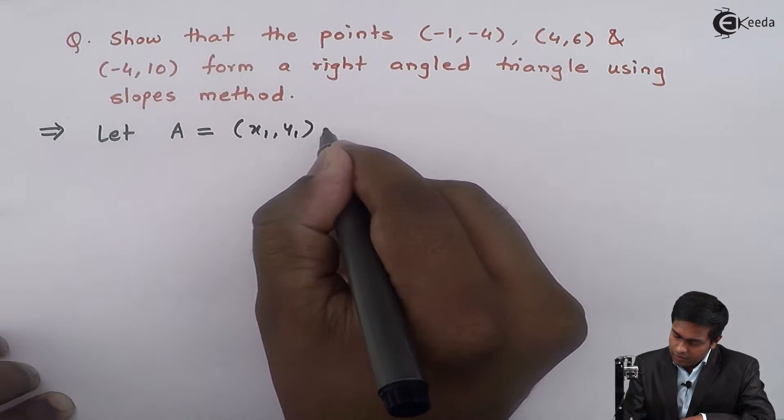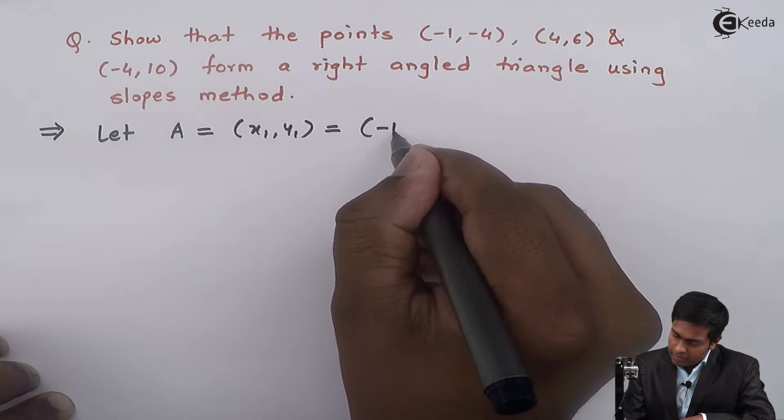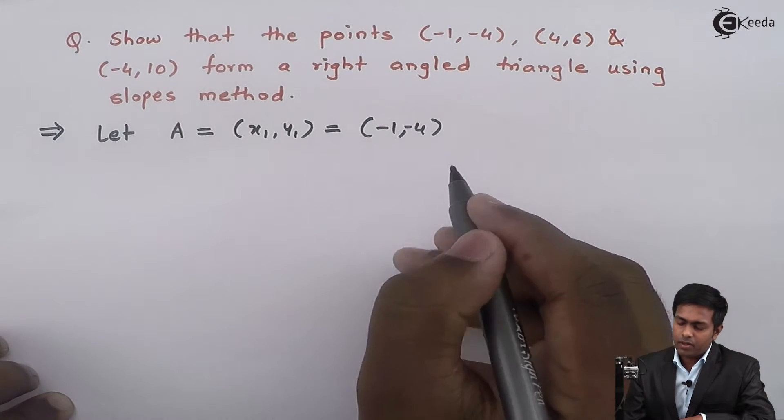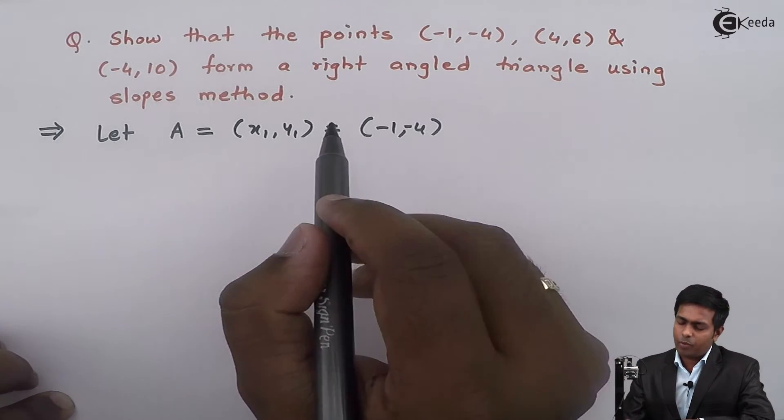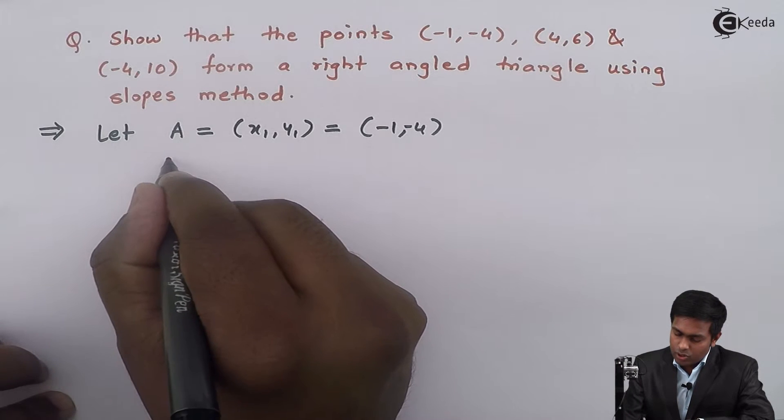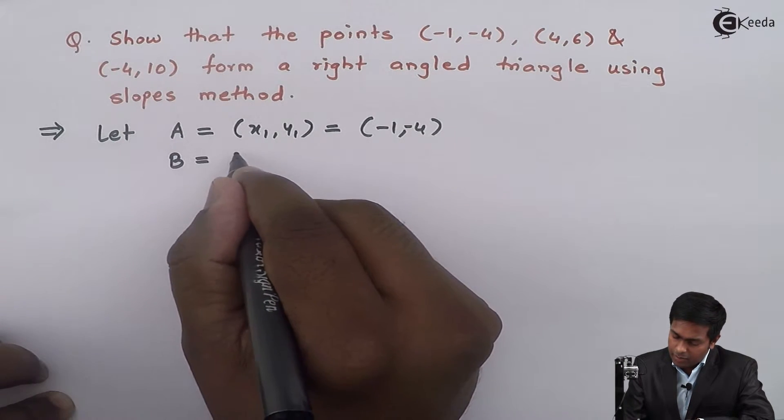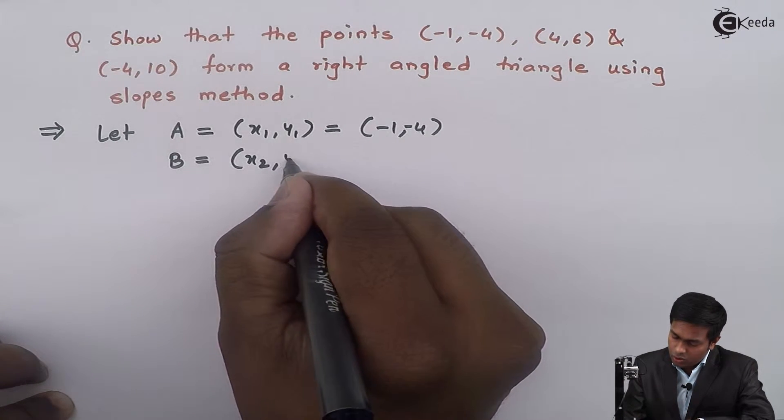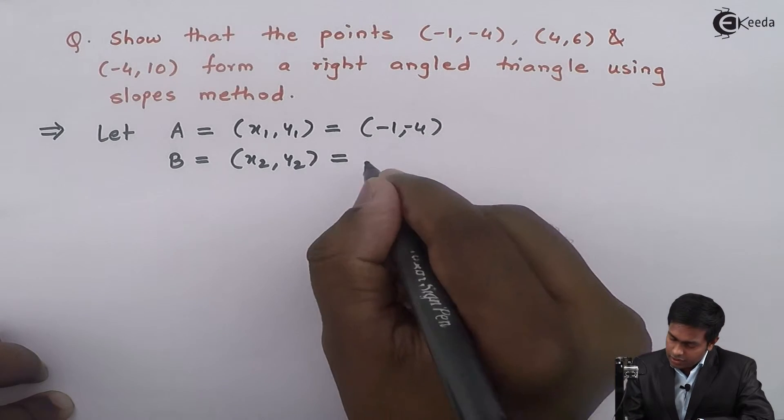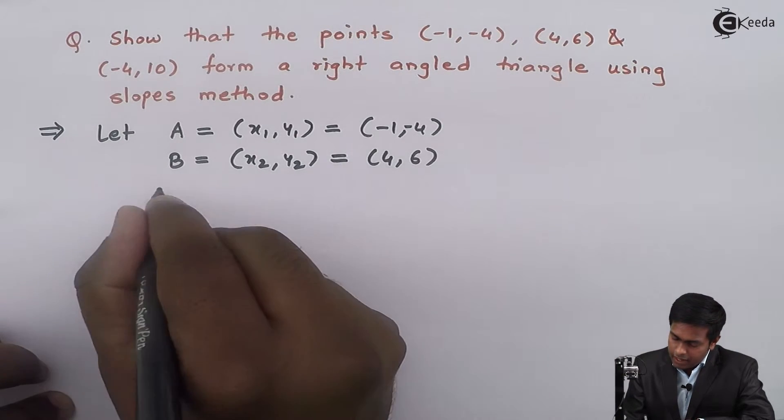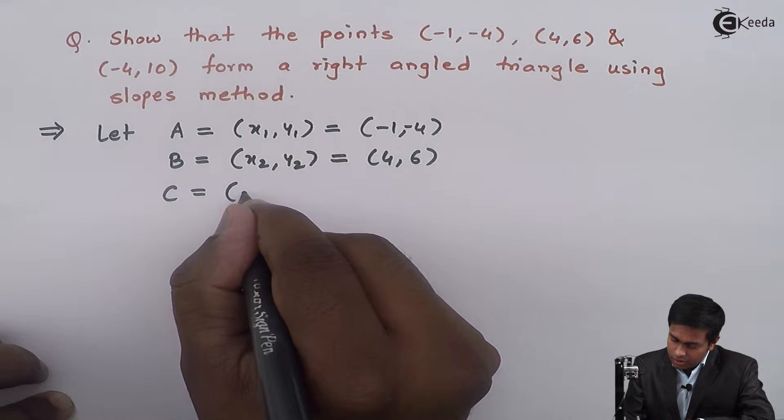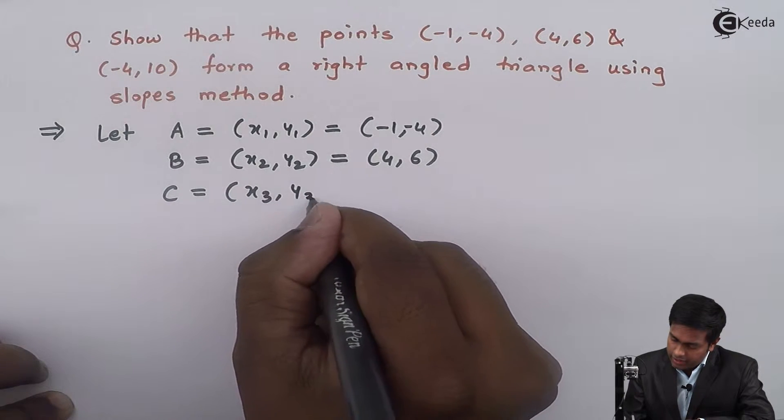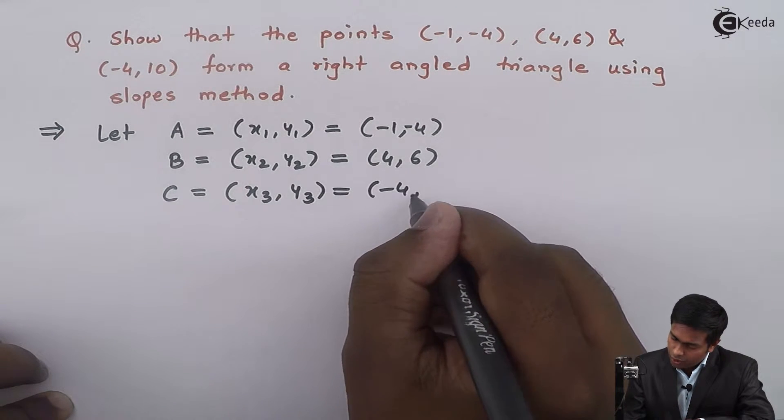Let A = (x₁, y₁) = (-1, -4). Next, let B = (x₂, y₂) = (4, 6), and C = (x₃, y₃) = (-4, 10).